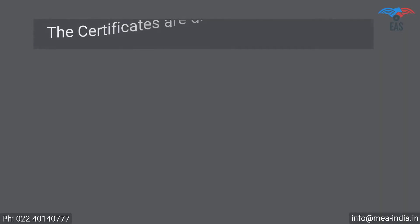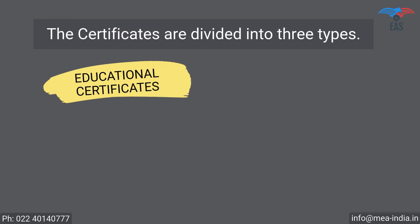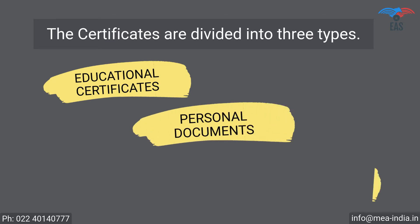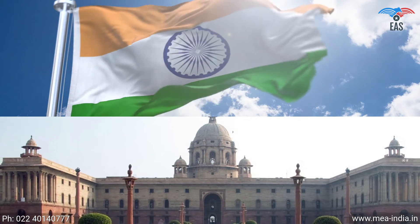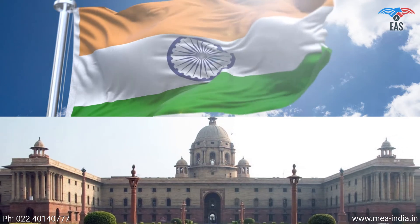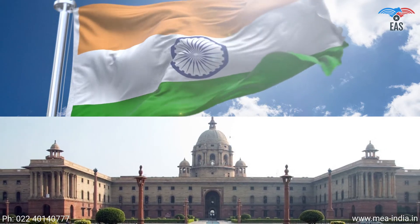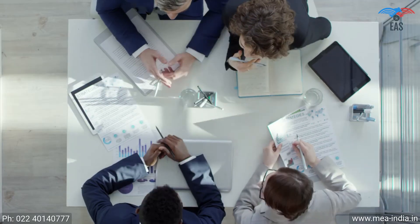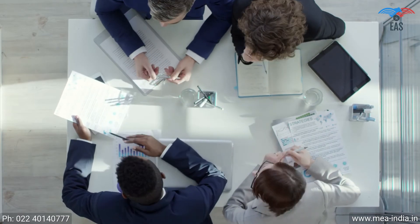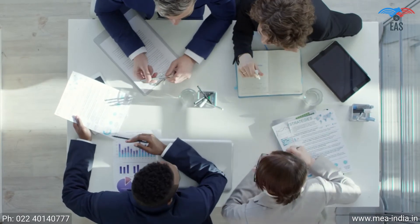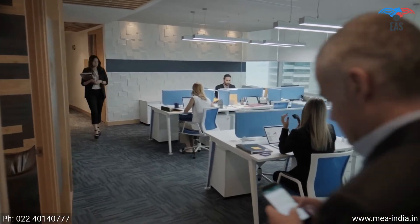The certificates are divided into three types: educational certificates, personal documents, and commercial documents. All three kinds of documents can be legalized from the Ministry of External Affairs. To reach the final apostille stamp, the document has to pass through some compulsory primary legalization processes from various authorized departments, which depends upon the kind of document.